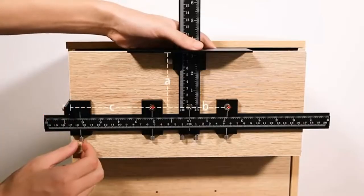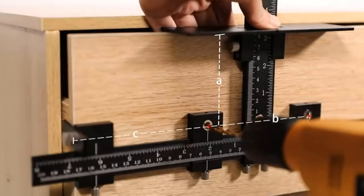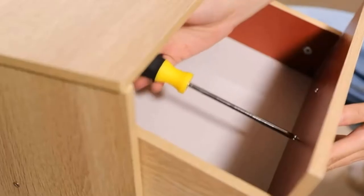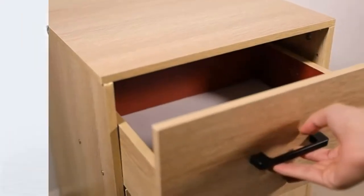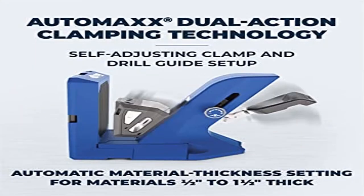Woodworking tools. Pocket hole jig 720 dust collector, vacuum adapter, easy set drill bit, easy set stop collar, six inch number two driver bit, one downloadable plan, three inch number two driver bit, 60 Craig pocket hole screws and material thickness gauge.